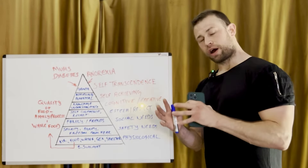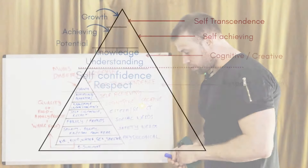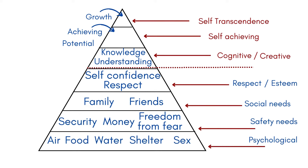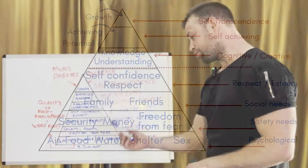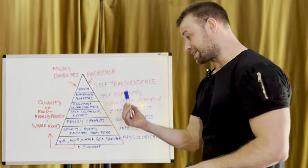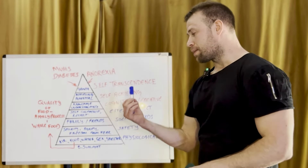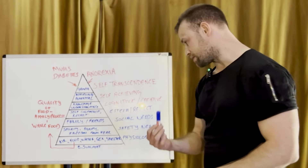Maslow's hierarchy of needs starts from the bottom. At the base we have physiological needs — the basic needs such as air, food, water, sex, shelter, and sunlight. Then we move up to safety needs: security, money, and freedom from fear. The next level up is social needs — basically family and friends. Then we have esteem or respect, based around self-confidence and respect itself.